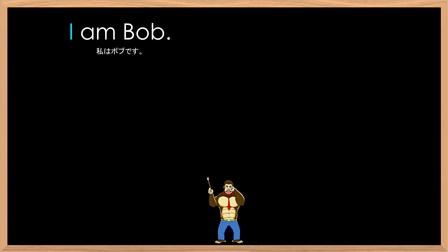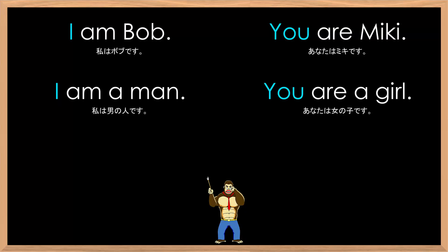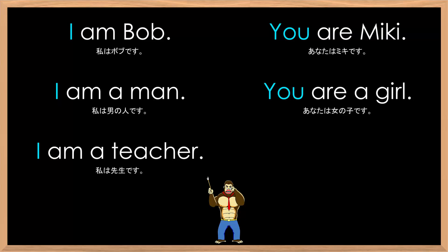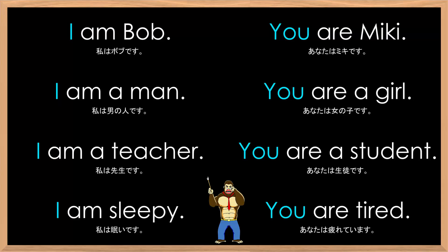Let's practice some other sentences. Here we go. I am Bob. You are Mickey. I am a man. You are a girl. I am a teacher. You are a teacher. You are a student. I am sleepy. You are tired.